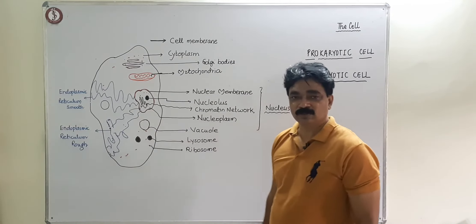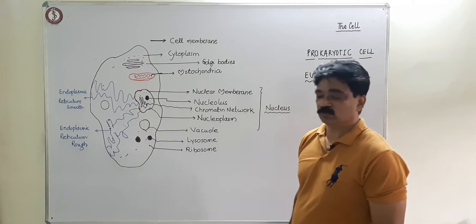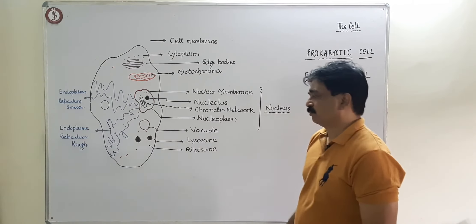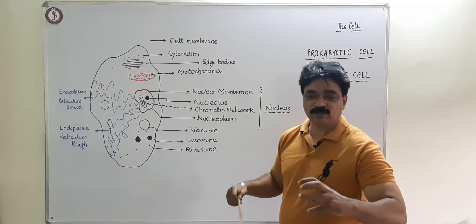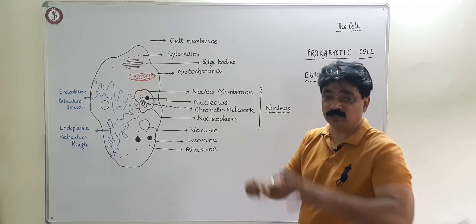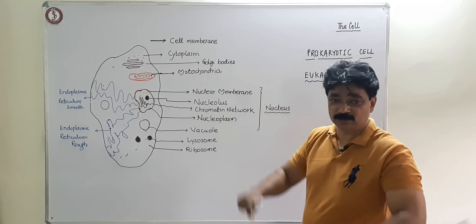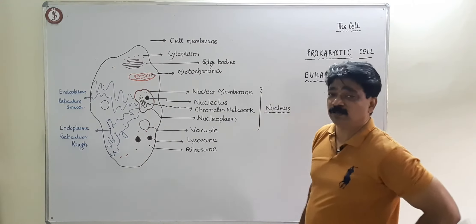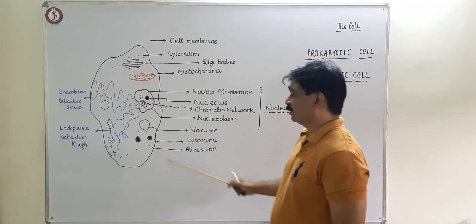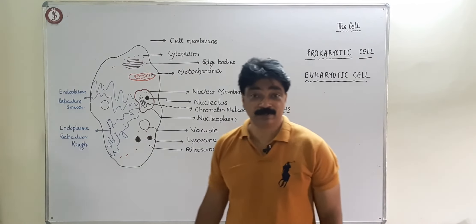Then we come to the vacuoles, which we will connect to the plant cell very soon. There are many vacuoles in the cell. The vacuoles give the cell some volume and shape, and they help maintain the pressure inside the cell — just like the pressure inside a balloon.